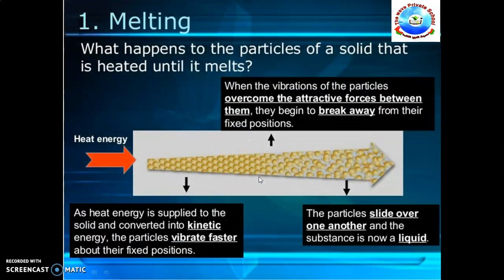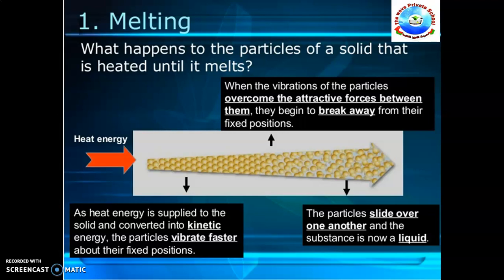What happens to the particles of a solid that is heated until it melts? As heat energy is supplied to the solid, it is converted into kinetic energy. The particles vibrate faster above their fixed positions with more vibration. When the vibrations of the particles overcome the attractive forces between them, they begin to break away from their fixed positions and slide over one another — the substance is now a liquid. The particles vibrate so much that some escape the strong forces and can move around as a liquid.